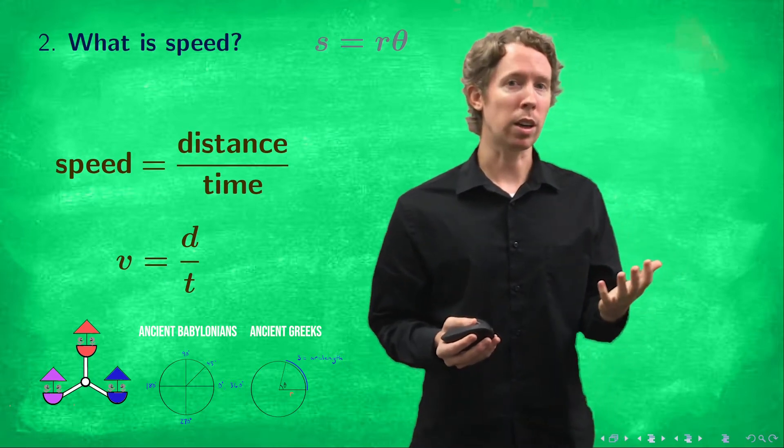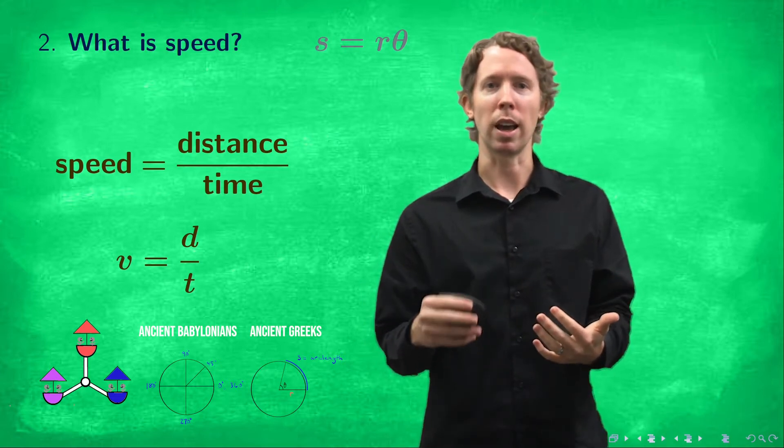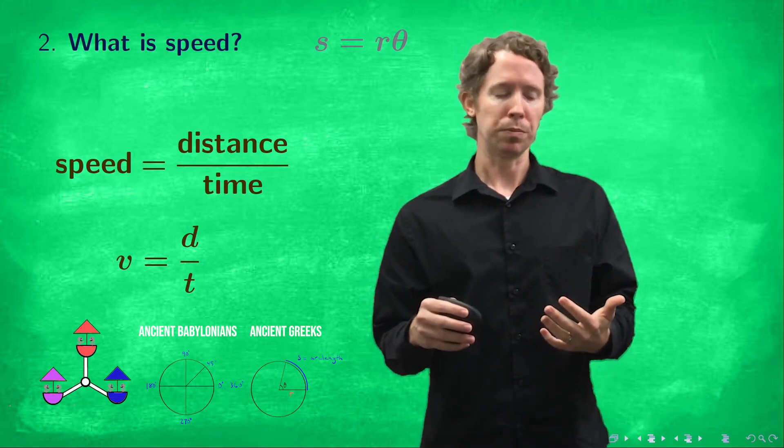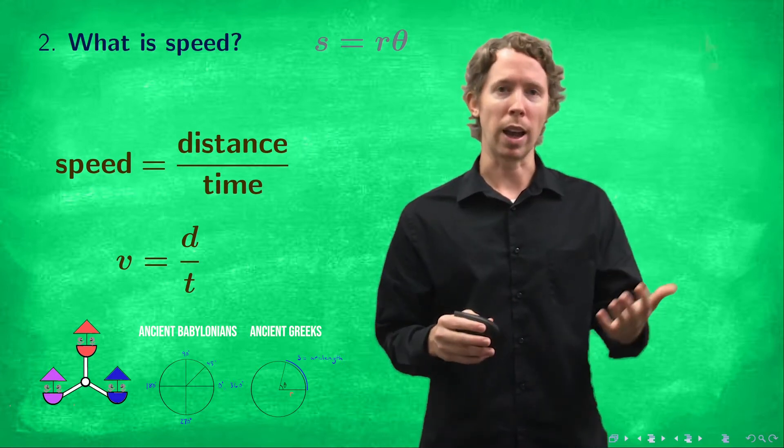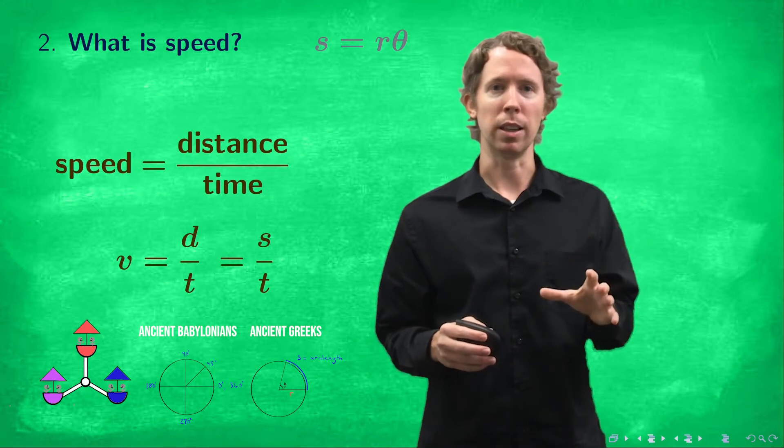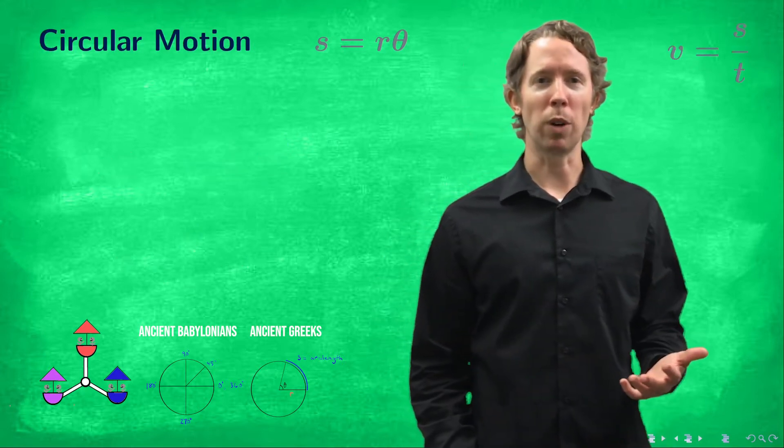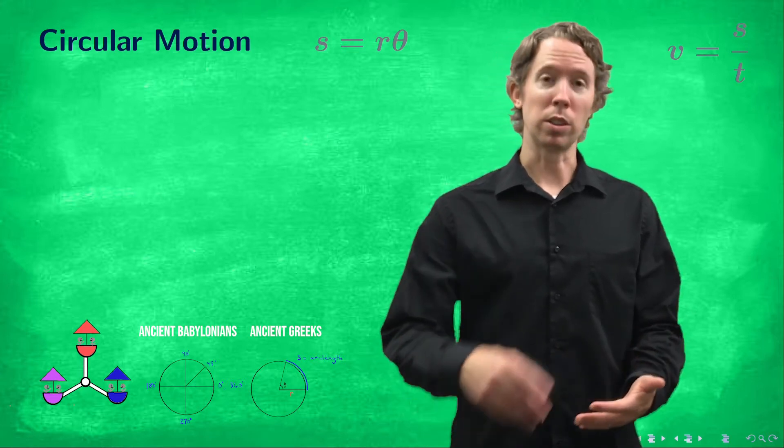The only distance that we're talking about in this type of situation where we've got circular motion is the arc length s. So instead of writing d for the distance we'll write s there and that's how we'll hang on to it. v equals s over t. So now that we've refreshed on those two ideas we're ready to talk about how fast something is moving when it's moving in a circle.